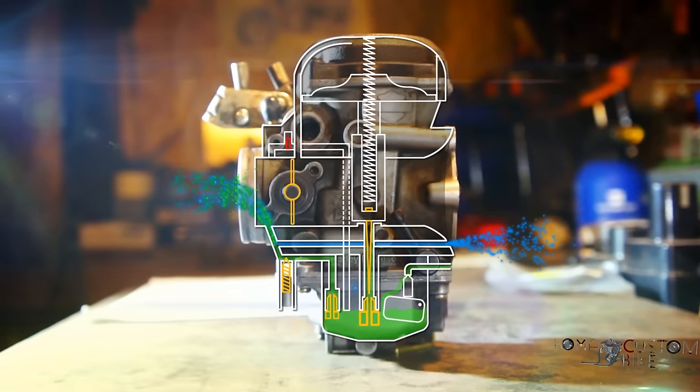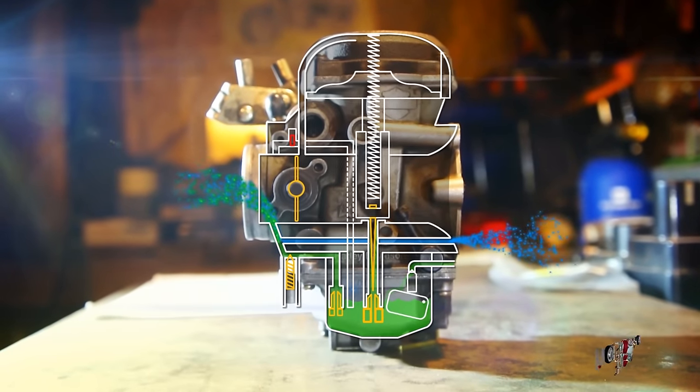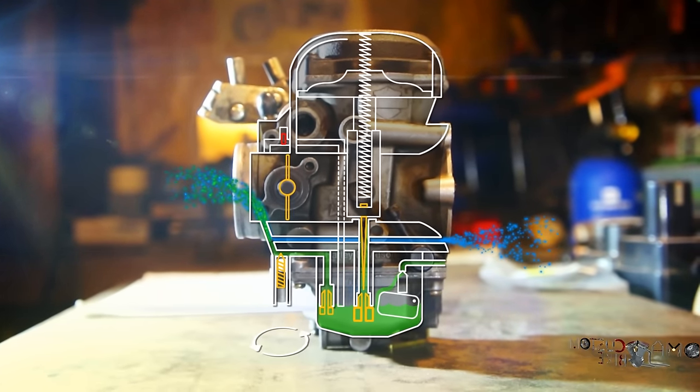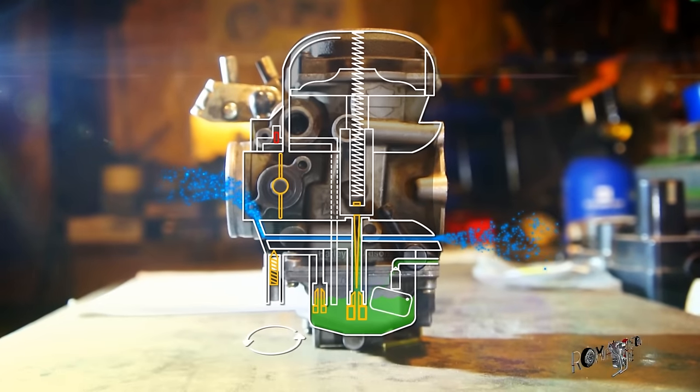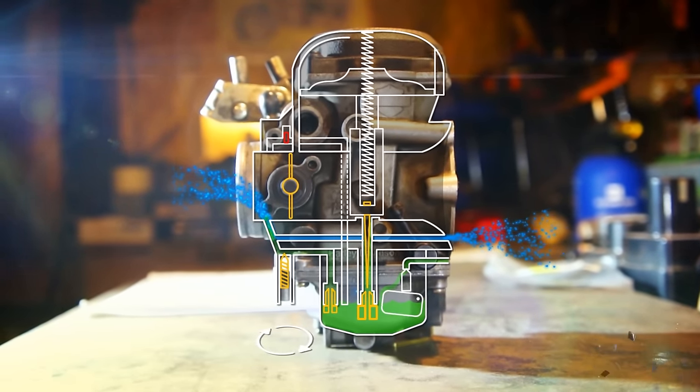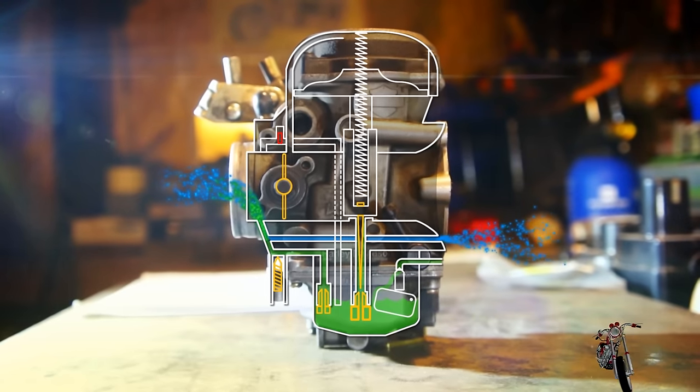But let's get back to the idle circuit so we can take a closer look at the mixture screw and how it works. By turning the screw, we open and close the fuel passage, therefore adjusting the ratio of fuel to air in the idle circuit.